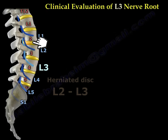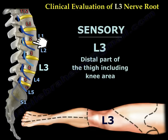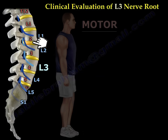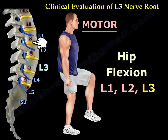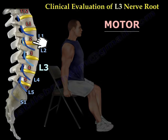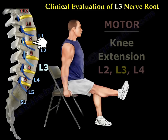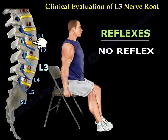A disc herniation between L2 and L3 will affect the L3 nerve root. The sensation of L3 will be the distal part of the thigh, including the knee area, as illustrated in this diagram. The motor: hip flexion (L1, L2, and L3), hip adduction (L2, L3, and L4), and knee extension (L2, L3, and L4). There is no reflex for L3.